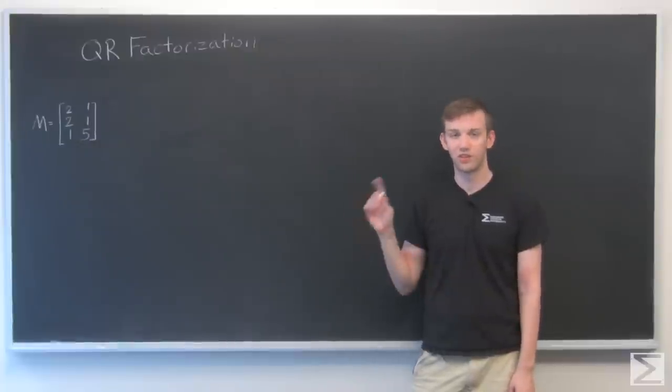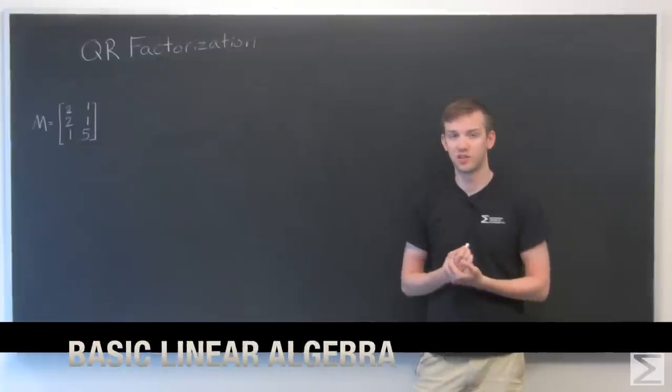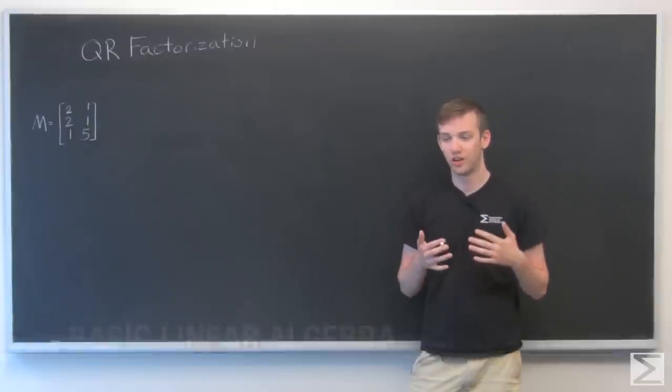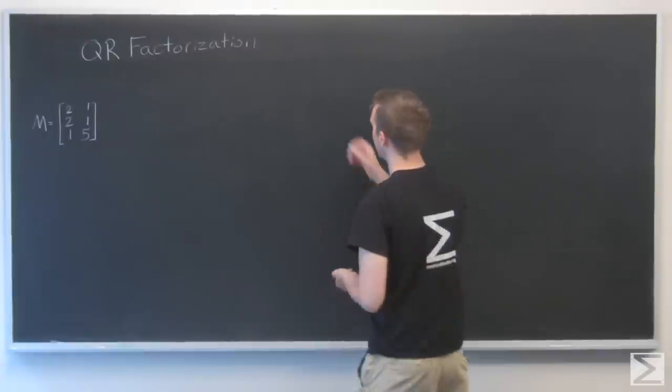In this video, we're going to go through the process of QR factorization. That's the process by which we take a matrix and turn it into a product of two matrices, which we commonly title Q and R.